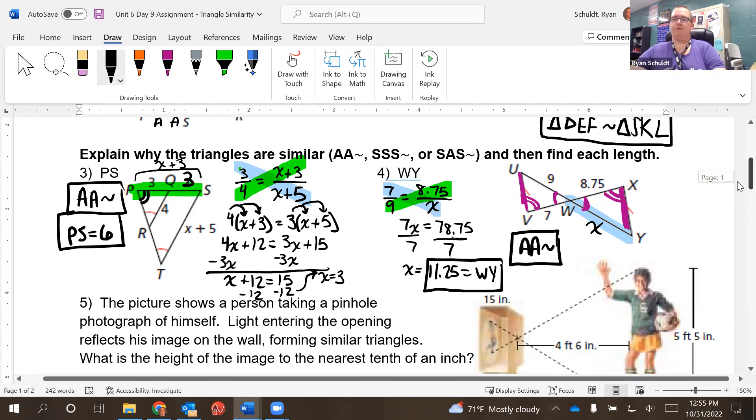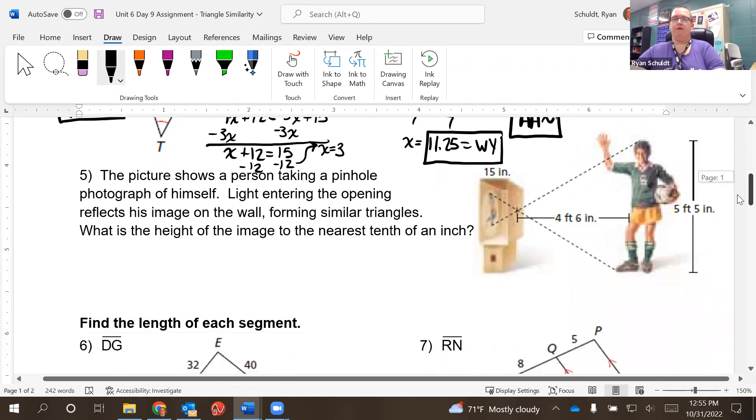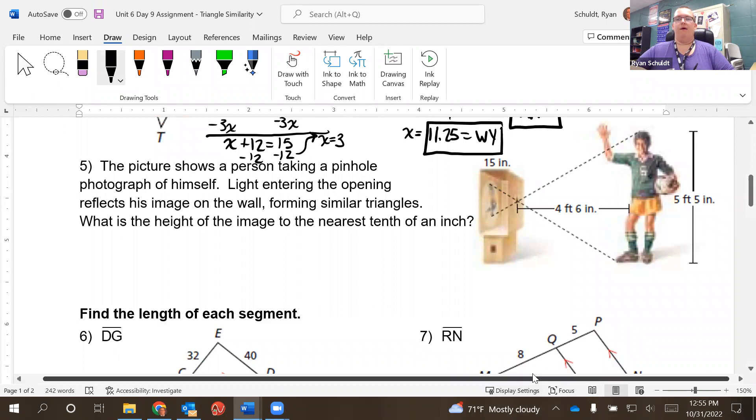Okay. Number five. The picture shows a person taking a pinhole photograph of himself. Light entering the opening reflects his image on the wall, forming similar triangles. What's the height of the image to the nearest tenth of an inch? So we know how deep the box is. We know the box is 15 inches deep. What they're asking us to find is how tall is he on the picture? So I'm going to call that X.